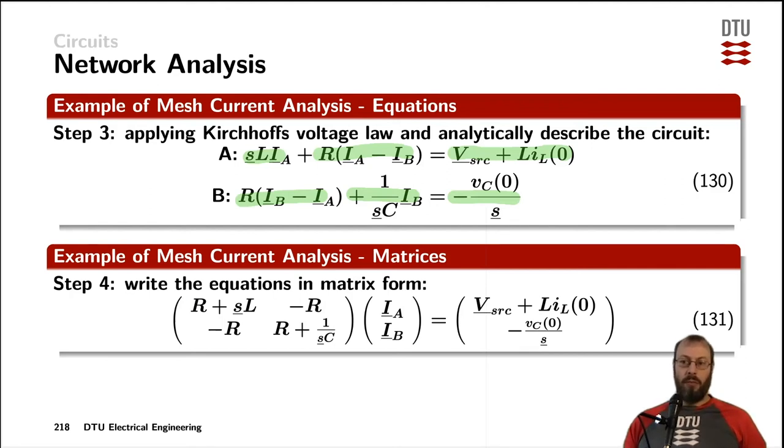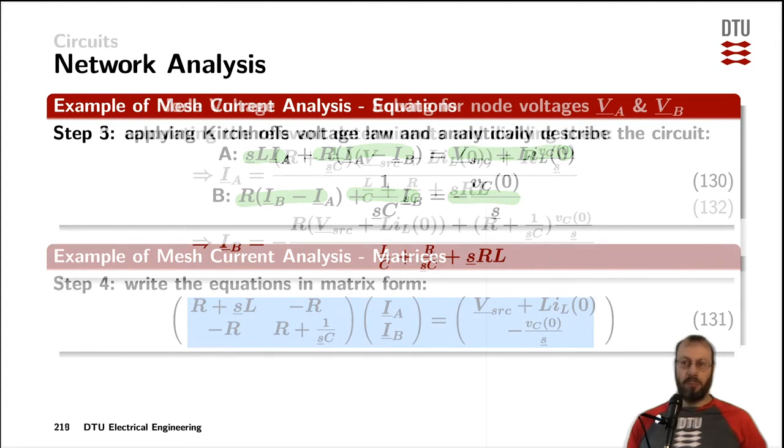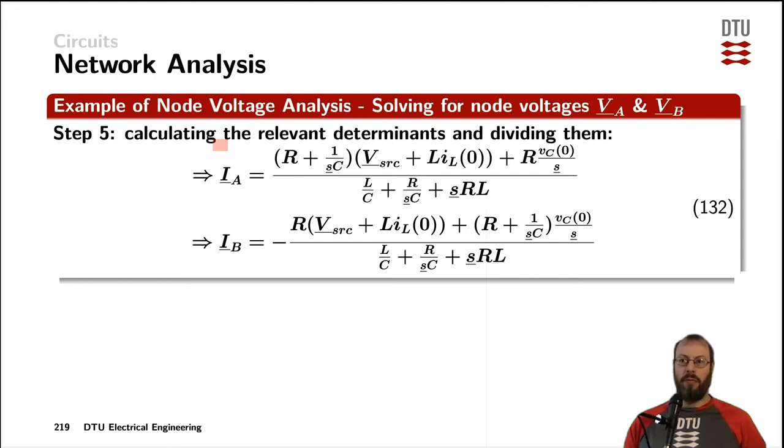Now we can rewrite those equations into a matrix form. And finally, applying Cramer's rule helps us to determine the currents by calculating the determinants of the relevant matrices, both for the current A and for the loop current B.